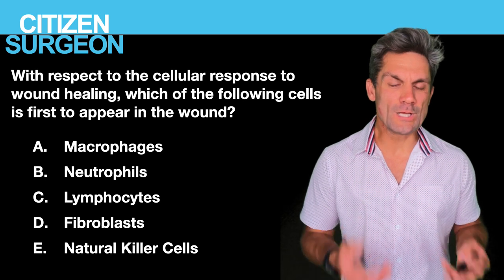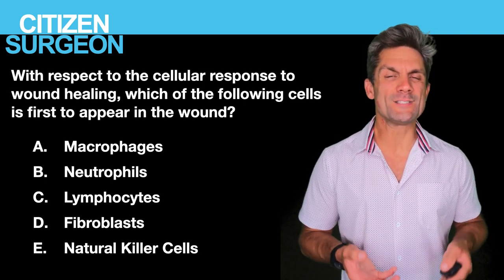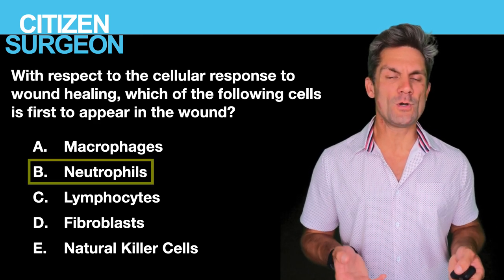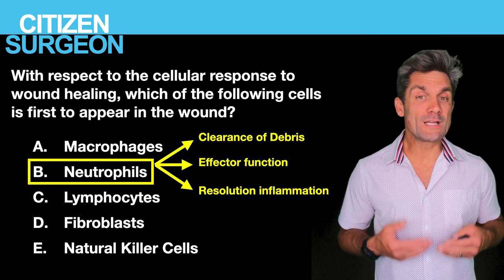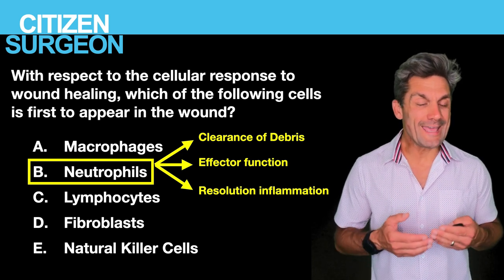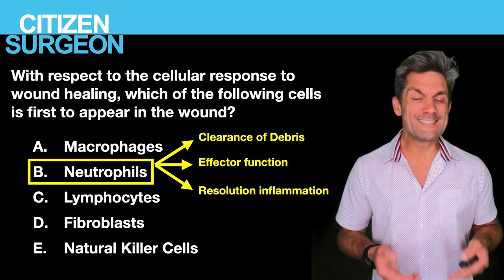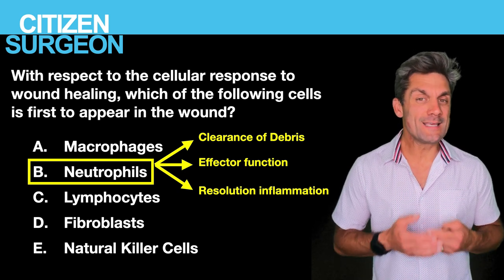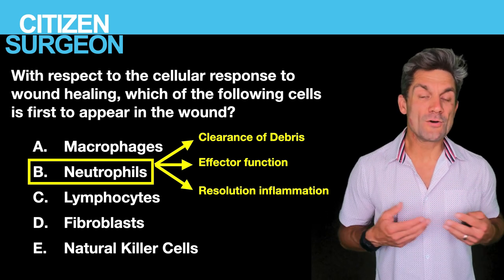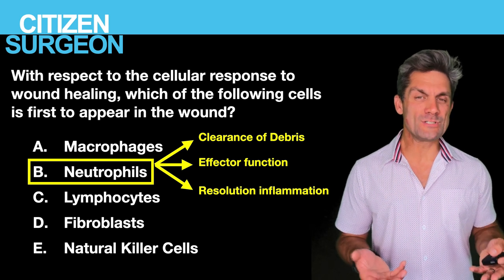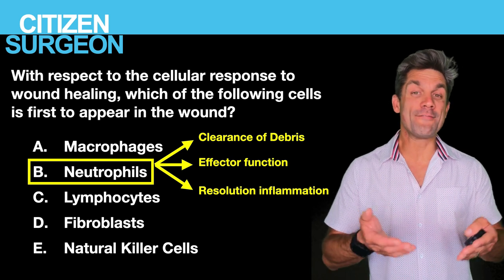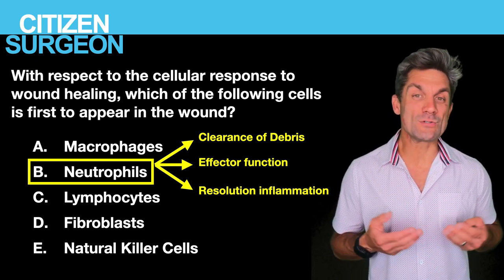For question two, the first cells to appear in the wound are neutrophils. They clear debris as professional phagocytes, release growth factors and cytokines for cellular recruitment, and help resolve inflammation. When neutrophils finish their job, they undergo apoptosis and are cleared through efferocytosis by the resident macrophages around day three. For question three, the predominant cell type on day three is the macrophage.